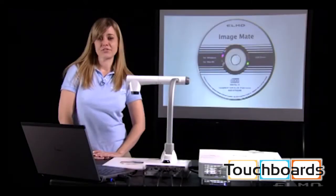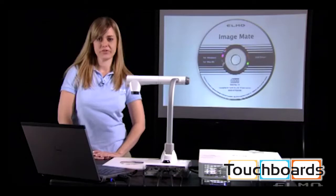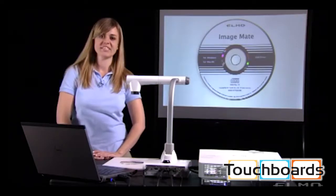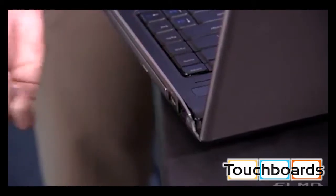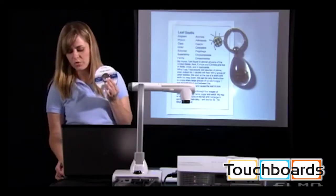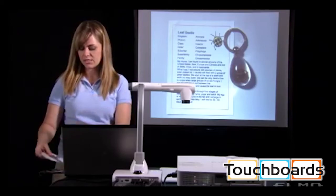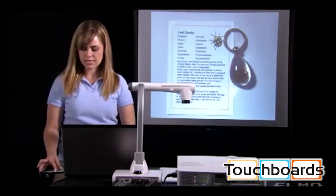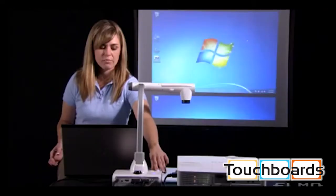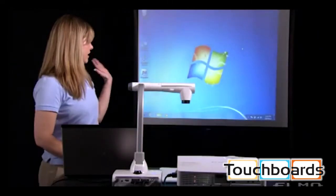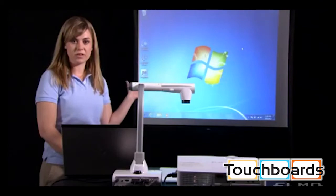If you do decide to connect your document camera to a computer, then you can use the ImageMate software that came with the document camera. Disconnect the USB cable, then insert your CD, and you will switch from document camera mode to computer mode, so now you are going to be able to see your computer desktop.